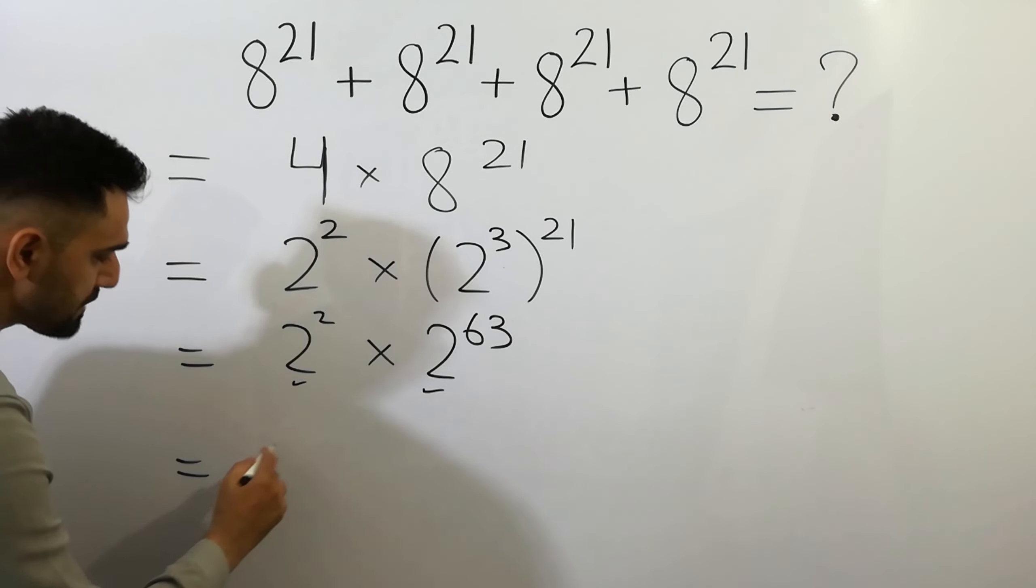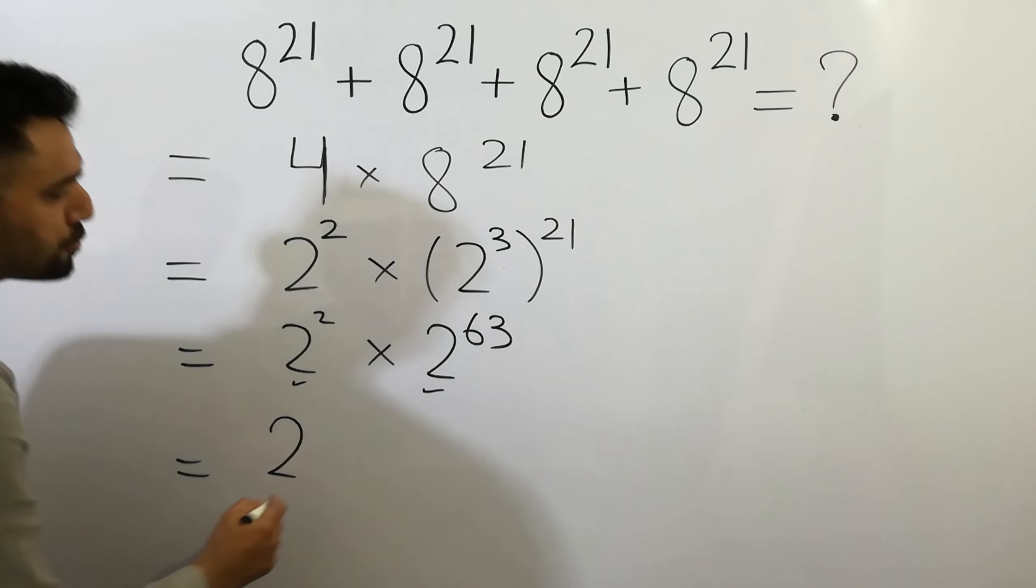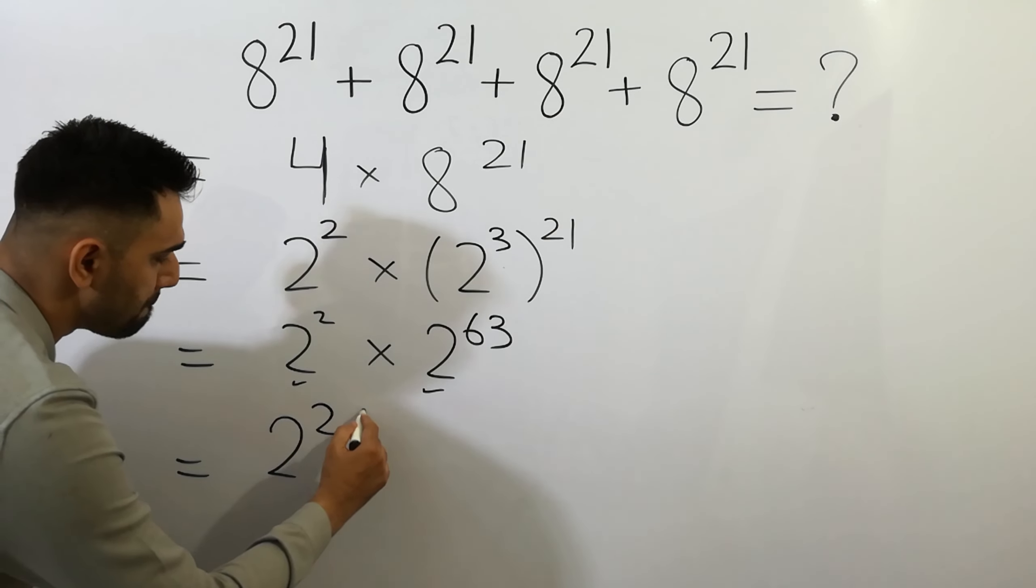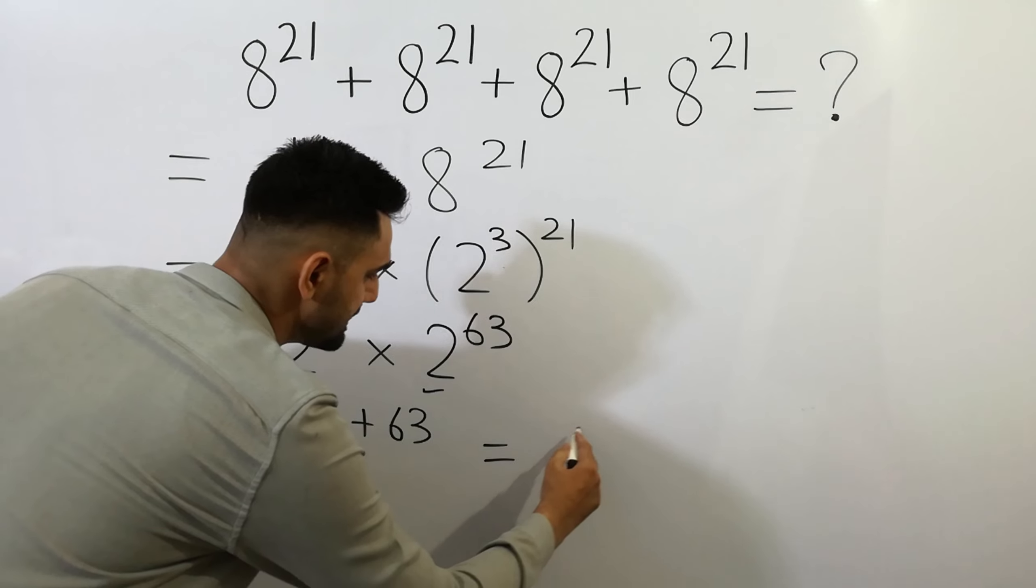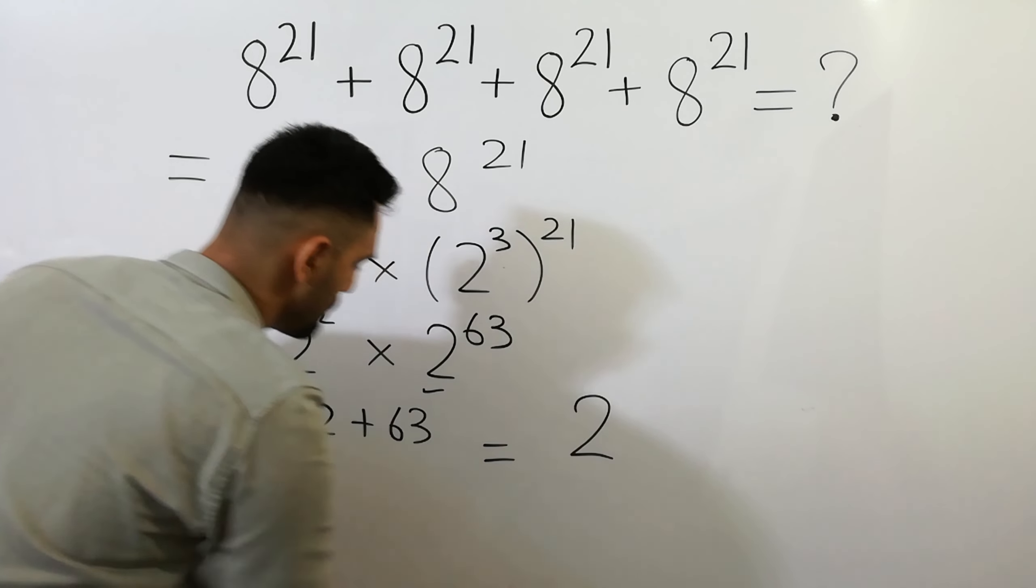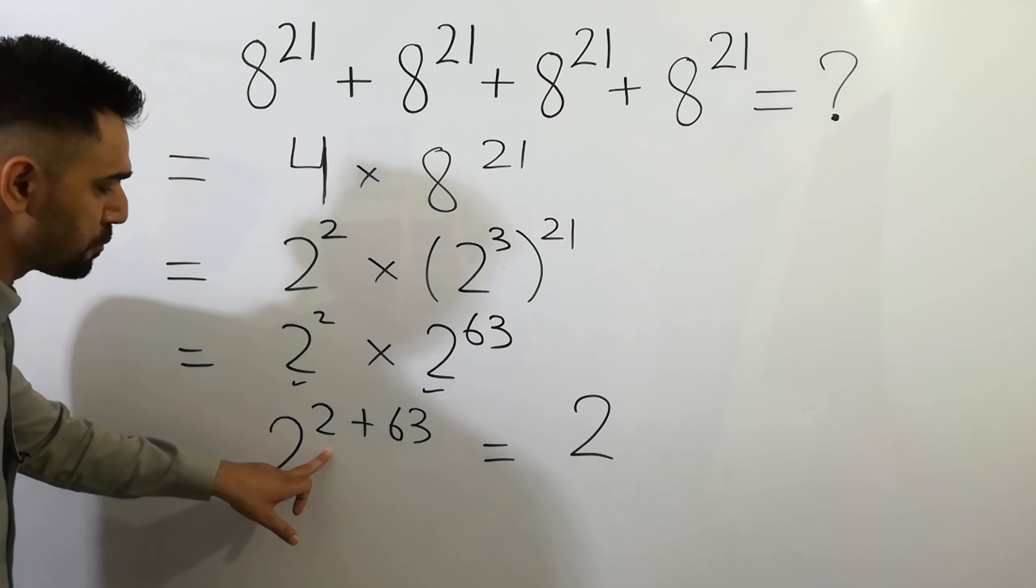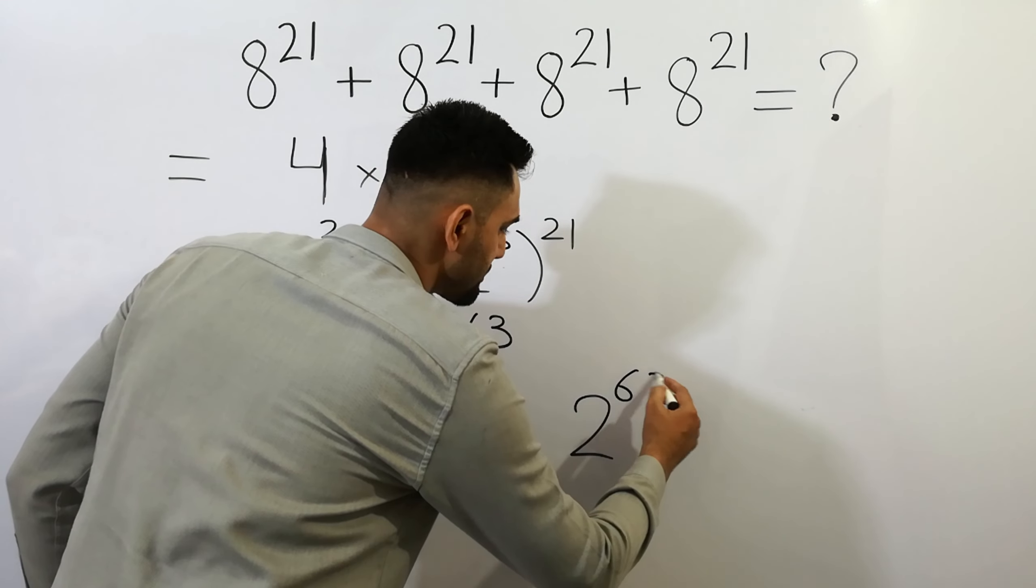the powers will be added: 2 to the power 2 plus 63. And this is equal to 2 to the power 63 plus 2 equals 65.